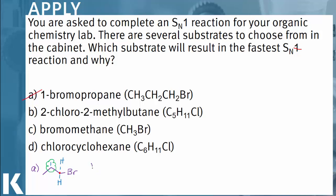Our next answer choice is 2-chloro-2-methylbutane: four carbons with a chloride and an additional methyl group on the second carbon. Since my leaving group is attached to that central carbon, that is where my carbocation will form. It has a methyl group, another methyl group, and a longer alkyl chain attached to it. This substrate is a great candidate for an SN1 reaction because it is well supported by electron density surrounding the carbocation. However, since the question asks for the fastest SN1 reaction, we should look at the remaining answer choices.